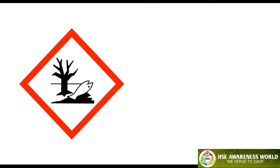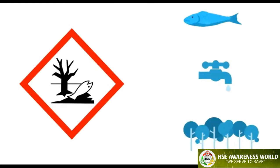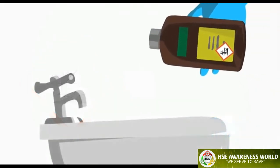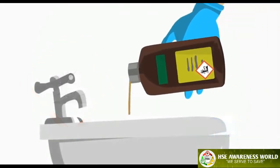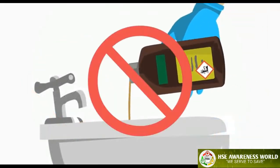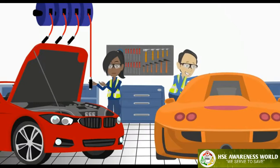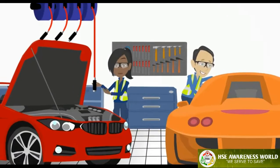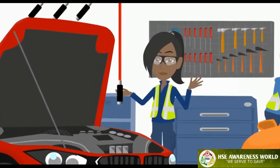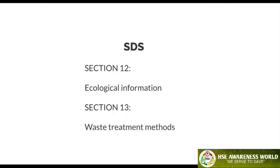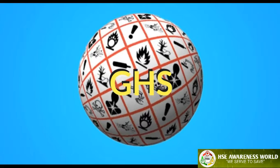The final GHS label signifies an environmental contaminant. The important consideration is never disposing of waste into drains. Refer to supervisory staff for safe disposal procedures. For more information, refer to Sections 12 and 13 of the SDS.